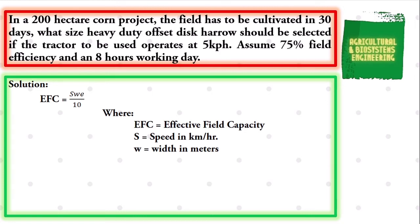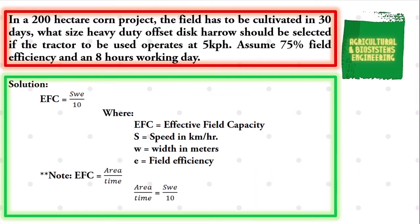E is the field efficiency. We also know that another formula to solve for effective field capacity is by getting the quotient of area over time. Having this formula, we simply equate it to our first equation: EFC = S × W × E / 10.